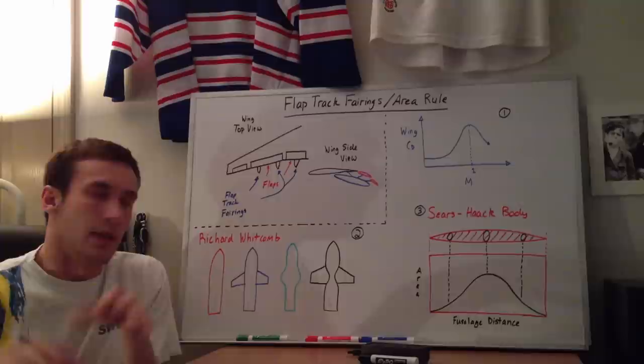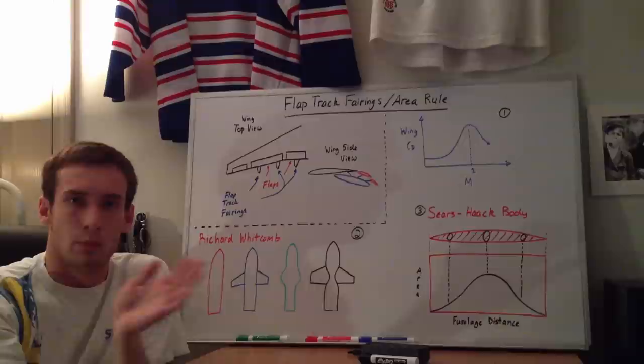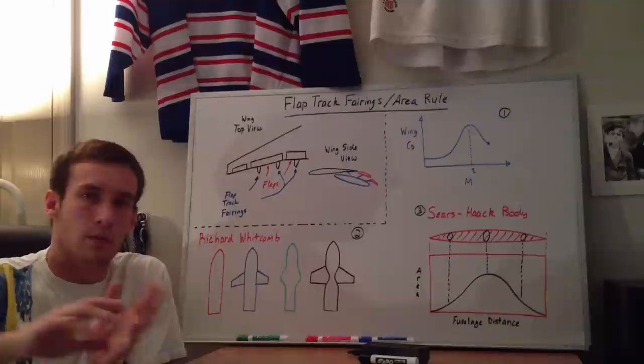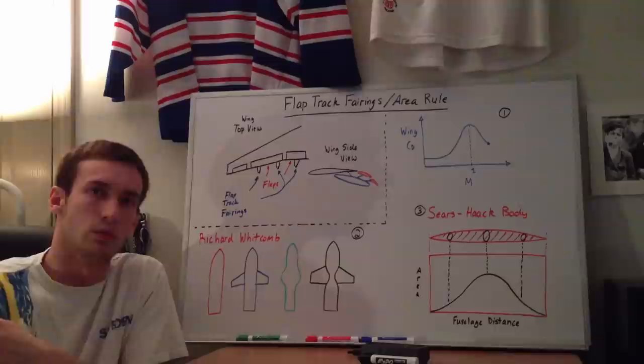So what they need to do, to make the plane more aerodynamic, is put these things called flap track fairings on, which smooths out the flow and covers up all these weird linkages and gears and screws that would otherwise be in the flow.